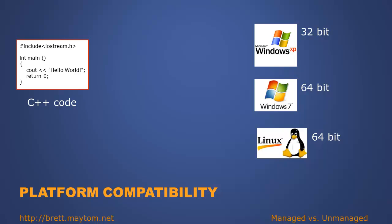So what is a platform? A platform, simply put, is an operating system running on a certain processor and chipset with a specific processor architecture.